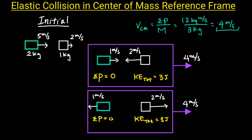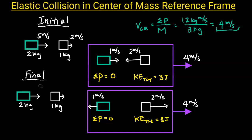This, however, is not our solution, because we still need to transform back to the laboratory frame of reference. To do this, we are going to add our velocity to the center of mass velocity. In the center of mass, object 1 is moving to the left at 1 meter per second. However, our center of mass velocity is 4 meters per second to the right. If we add these two together, because they are in opposite directions we subtract, we get 3 meters per second. For object 2, since it is moving to the right in the center of mass reference frame and the center of mass velocity is 4 meters per second, 2 plus 4, we get 6 meters per second. So in the laboratory frame of reference, object 1 is moving to the right at 3 meters per second and object 2 is moving to the right at 6 meters per second.